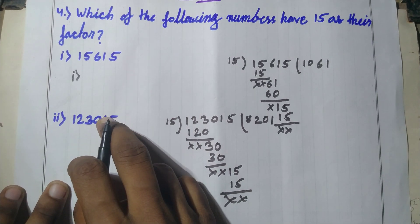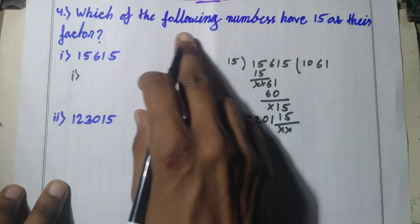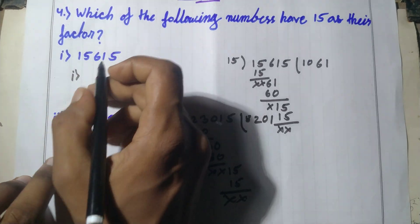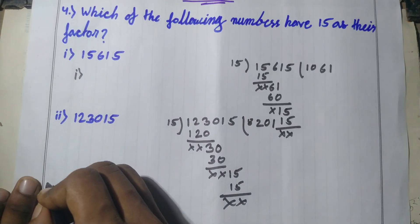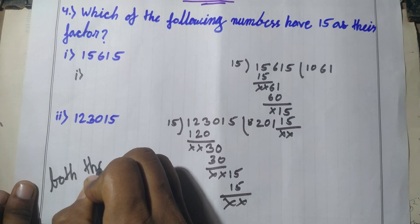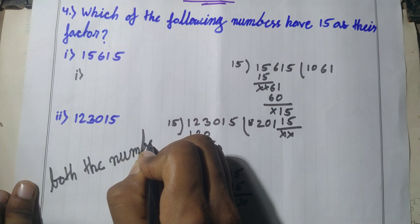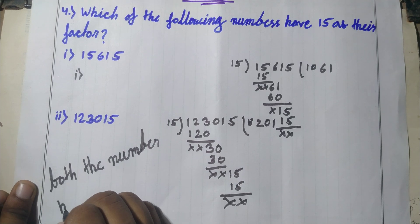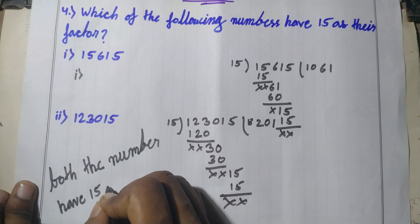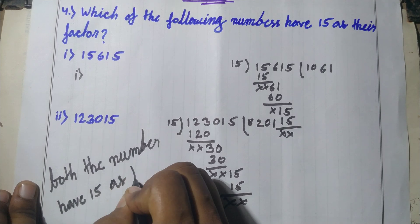Both numbers are factors of 15 — meaning both numbers are exactly divisible by 15. Both of these numbers have 15 as their factor. Write this as the answer: both numbers have 15 as their factor.